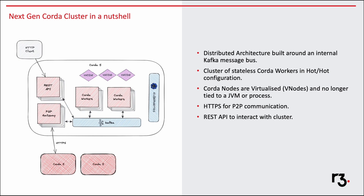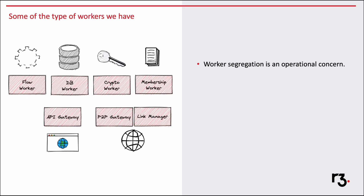Hence, from your client application, whichever language it's written in, it can easily communicate with the Coda cluster over HTTPS or even using an HTTP client. Internally, there are different workers which focus on specific tasks — it's all about segregating relevant work to relevant workers. Each worker has certain privileges which other workers don't have. For example, the DB worker is the only process which can read and write to a database. The crypto worker is the only worker which can access the private keys to sign transactions. We can even combine all the workers in one single JVM process — that's the combined worker concept, which we will use for day-to-day development and testing.